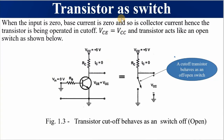We now want to turn the transistor off, just like an ordinary switch. Our input voltage Vin must be equal to zero volts. If the input is zero volts, nothing is going to flow through the collector resistor Rc, meaning there is no voltage drop across Rc. Therefore, the voltage between the collector and emitter will be the same as Vcc.